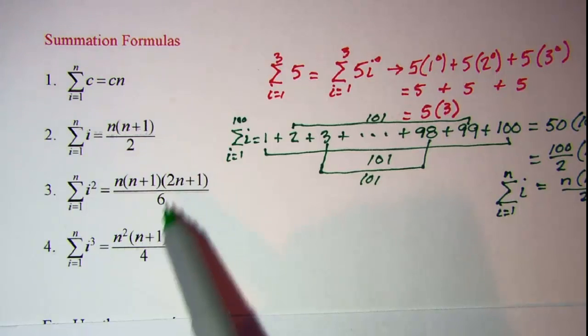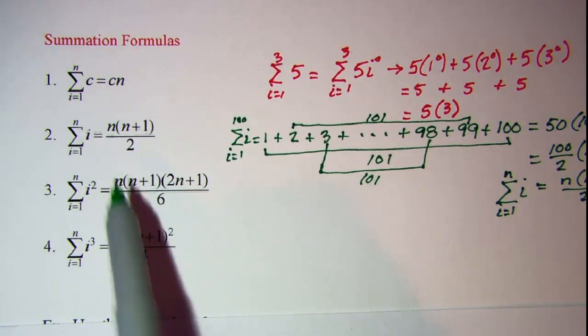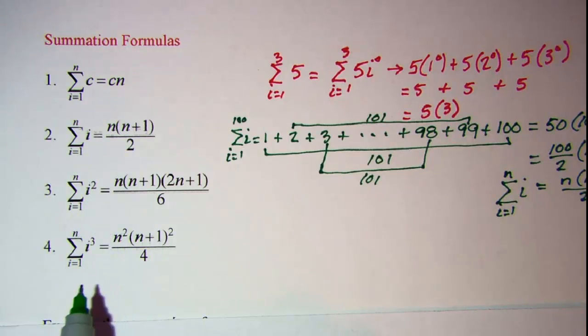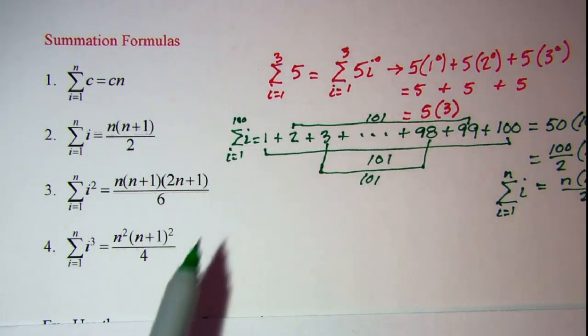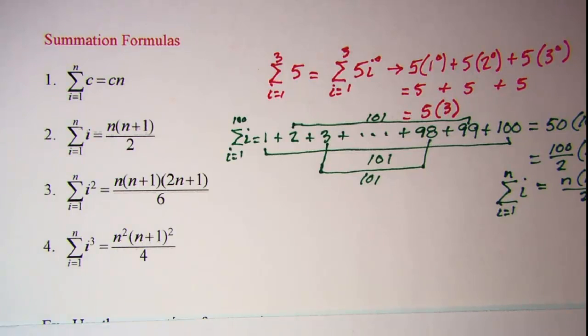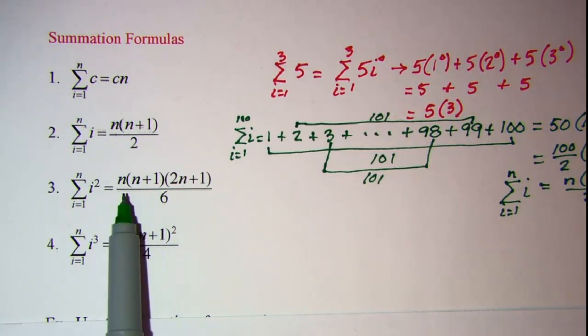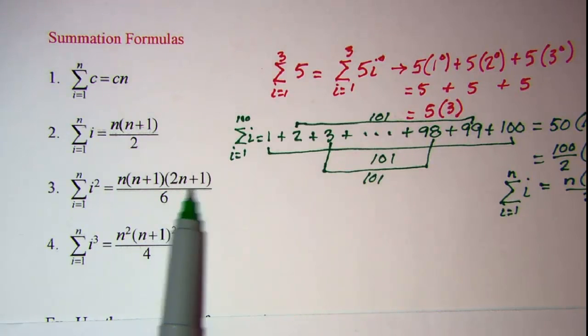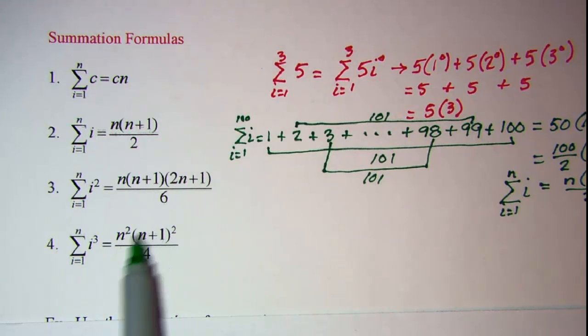All right now these other two we'll just need to memorize. At this point we are not going to prove those. But notice that all four of these formulas are ways that we can take a sigma notation statement and write the equivalent algebraic statement without a summation. So if we have an i squared we can write this product N times N plus 1 times 2N plus 1 divided by 6. And i cubed is N squared times the quantity N plus 1 squared divided by 4.